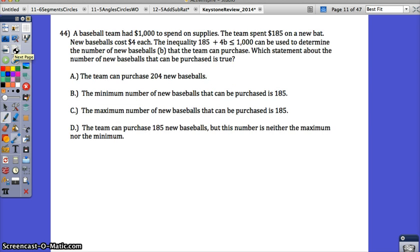Perfect. And then number 44. A baseball team has $1,000 to spend on supplies. The team spent $185 on a new bat and new baseballs cost $4 each. So the inequality, 185 plus 4B is less than or equal to 1,000, can be used to determine the number of baseballs that the team can purchase. Which statement is true about the number of baseballs?